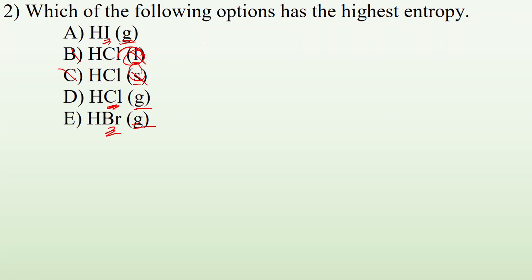So now the difference is HI, HCl, or HBr. Well, what's different about them? Typically, the heavier the molecule, the higher the entropy. So which one of these has the highest entropy? It's going to be the heaviest one, which is going to be iodine. All right.